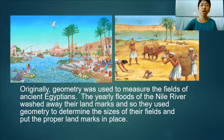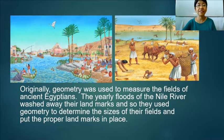Originally geometry was used to measure the fields of ancient Egyptians. The yearly floods of the Nile River washed away their landmarks, and so they used geometry to determine the sizes of their fields and put proper landmarks in place.